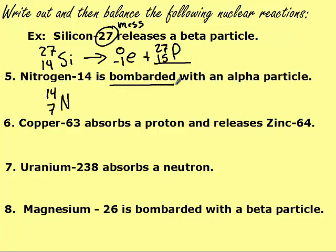So nitrogen-14 is bombarded with an alpha particle, which means the alpha particle should be on the same side, and we wind up with fluorine-18.